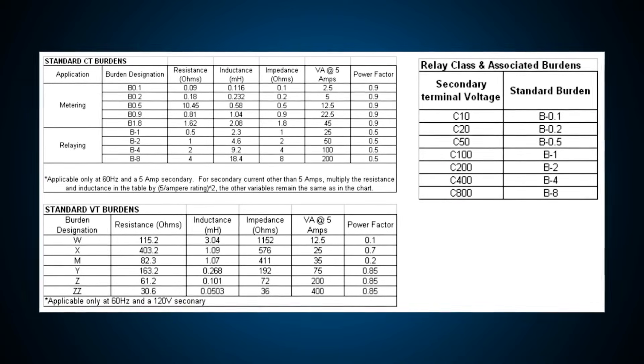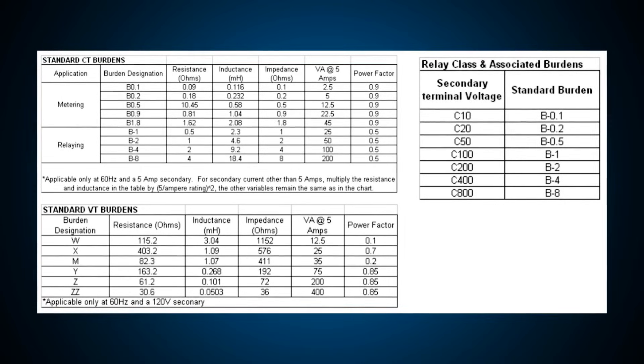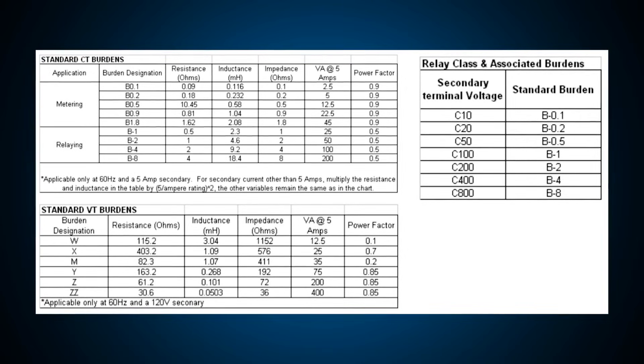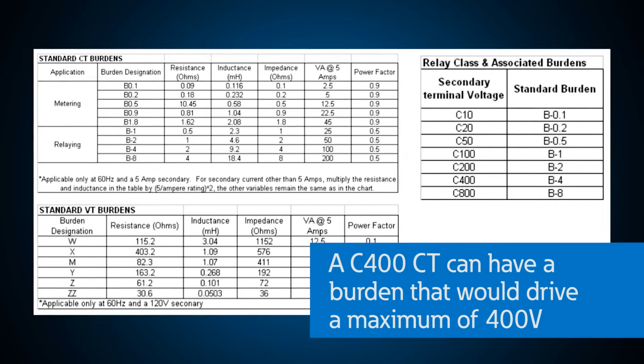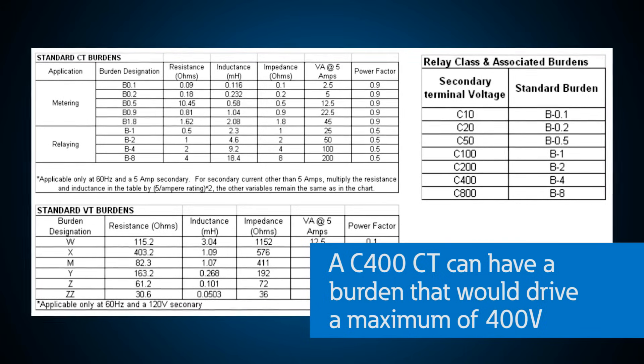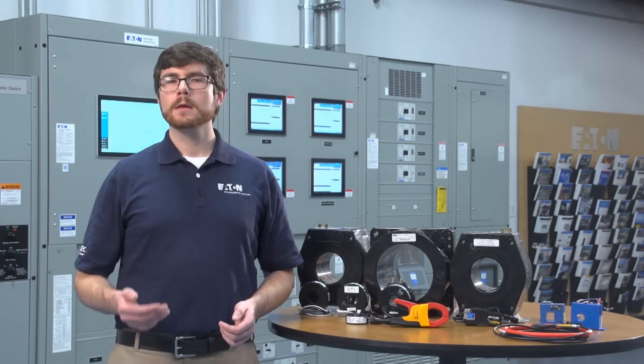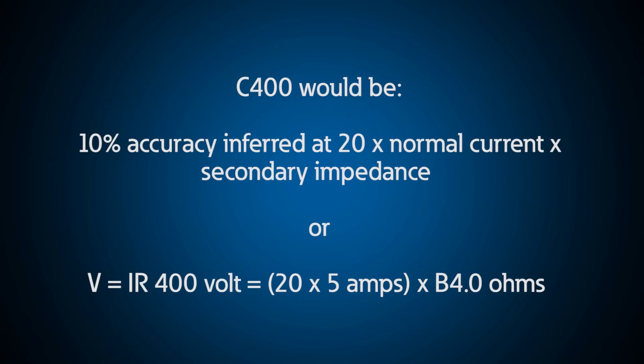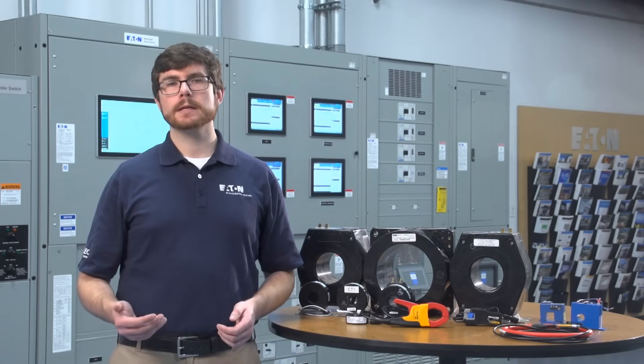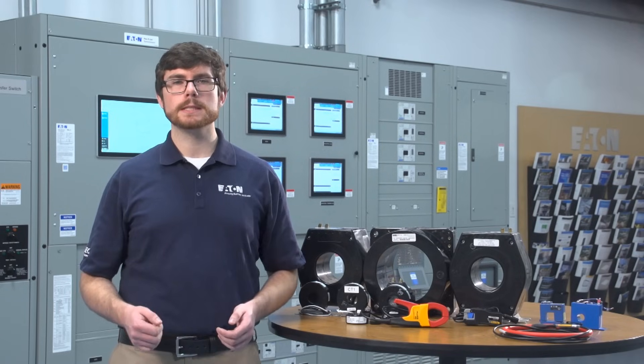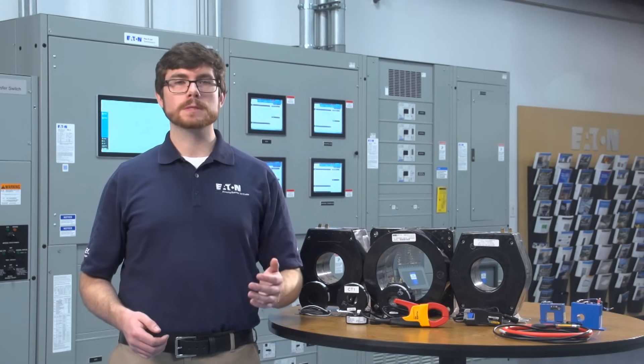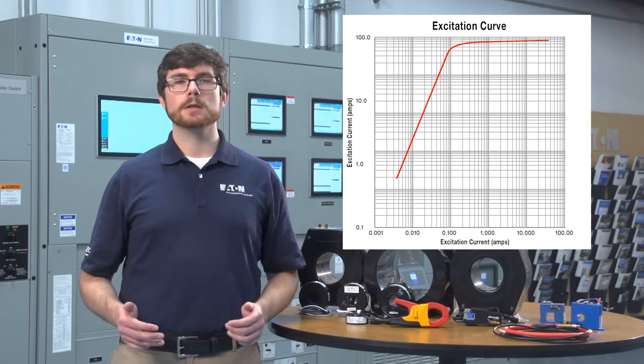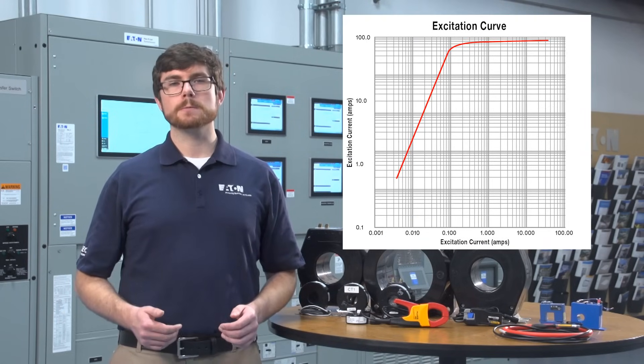In simple terms, this means that a CT with a higher rating can sustain more burden on the secondary without saturating. For example, a C400 current transformer can have a burden that would drive a maximum of 400 volts. Based on these tables, a C400 would have an error of no larger than 10% at 20 times normal secondary current with a secondary burden of 4 ohms. Manufacturers will often offer a graph of the excitation performance of a particular CT. The graph allows you to determine the performance of the CT over the entire range of secondary current and ensure that the CT will function as required.